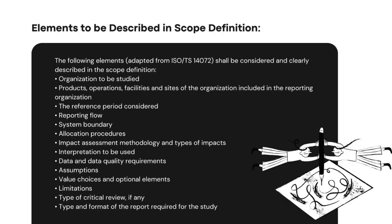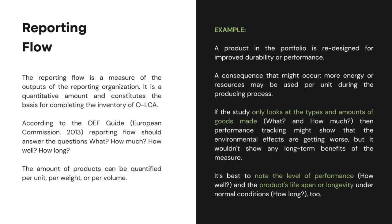There are elements that need to be described in scope definition. Also discussed in the first phase is the reporting flow, which is a measure of the outputs of the reporting organization. It is a quantitative amount and constitutes the basis for completing the inventory of OLCA. Reporting flow should answer the questions of what, how much, how well, and how long.